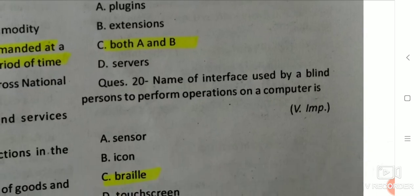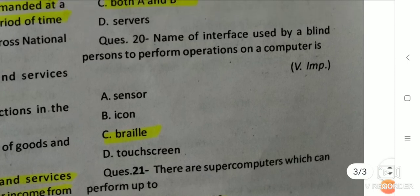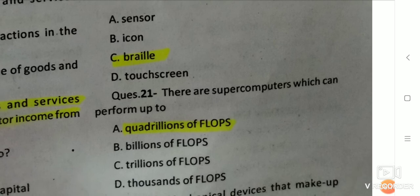Q19: Name the interface used by a blind person to perform operations on a computer — the right answer is Braille (option C). Q20: There are supercomputers which can perform up to quadrillions of FLOPS — option A is the right answer.